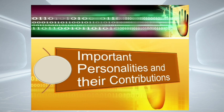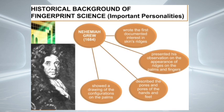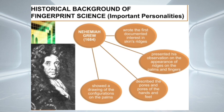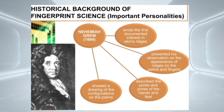Now let us proceed with the important personalities who contributed to the development of fingerprint science. First is Nehemiah Grew. In 1684, he wrote the first documented interest in skin ridges in the western world, entitled The Philosophical Transaction. This is mainly of anatomical nature, and he presented his observation on the appearance of ridges on the palms and fingers before the Royal Society in London, England. He described the pores of the hands and feet and showed a drawing of the configurations on the palms.